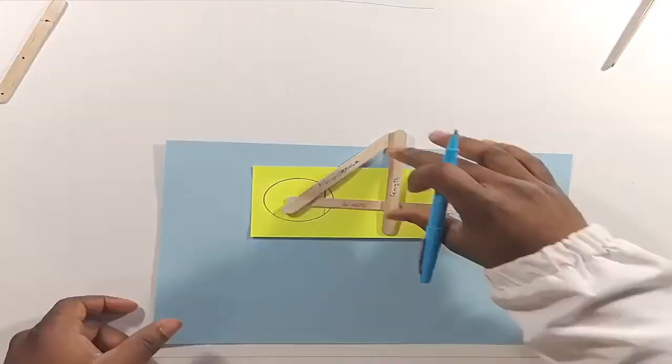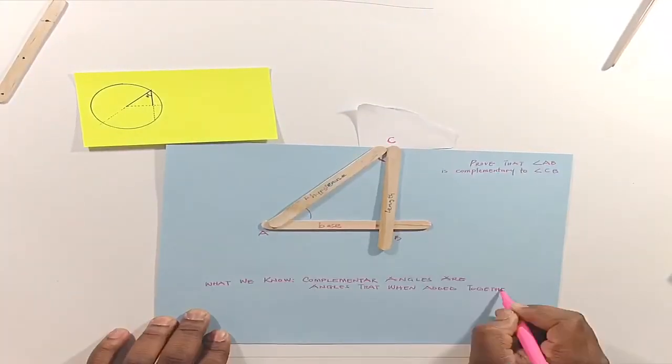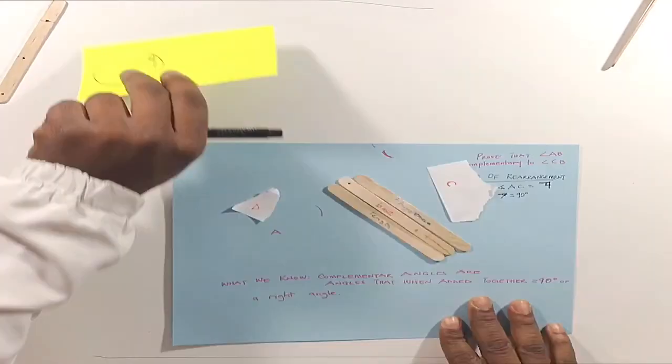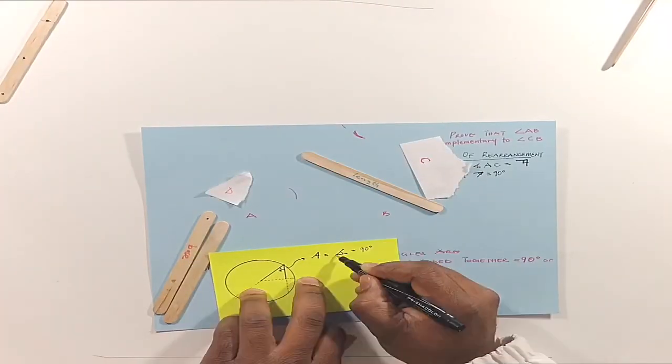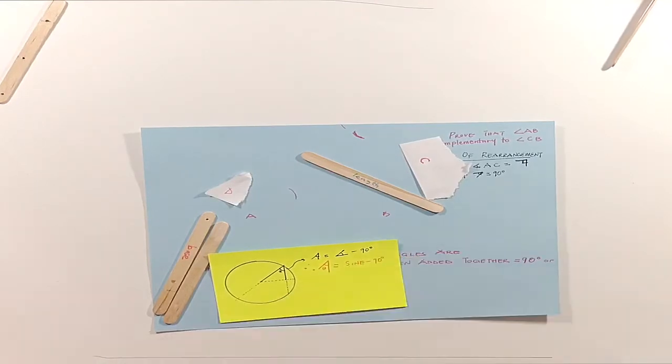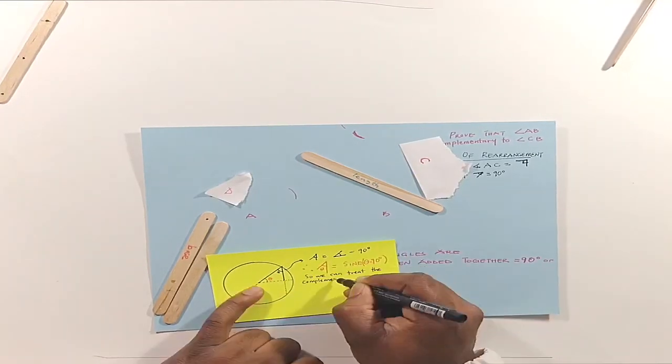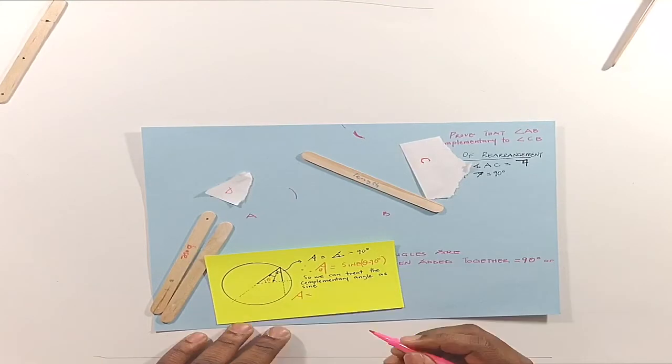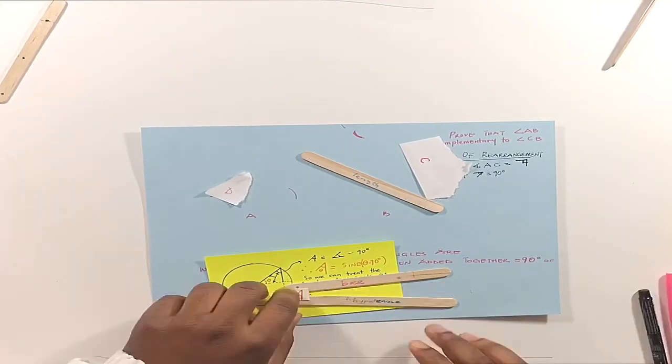We can treat the complementary angle the same as the sine angle. The only change is that we subtract that angle from 90 to get what we want. And since we're dealing with the sine angle, we can say that the complementary angle is proportional to the base and the hypotenuse.